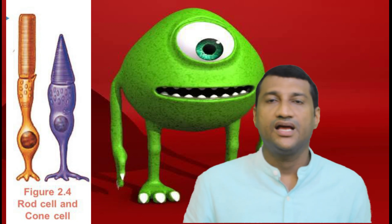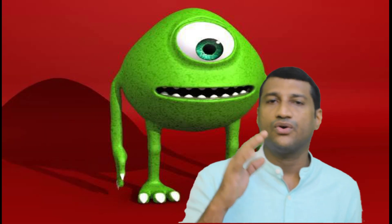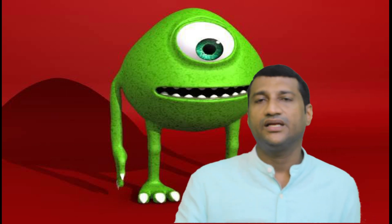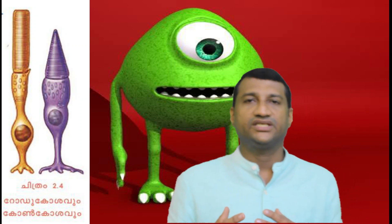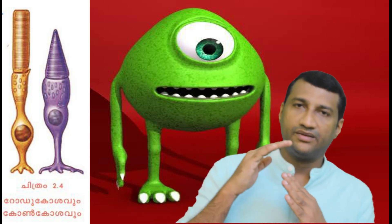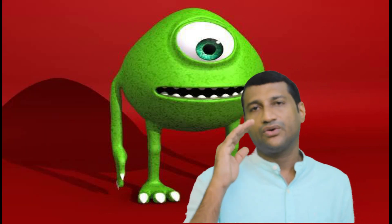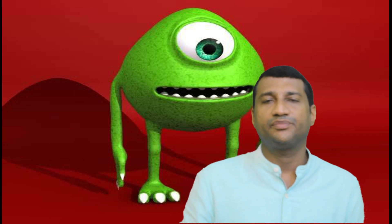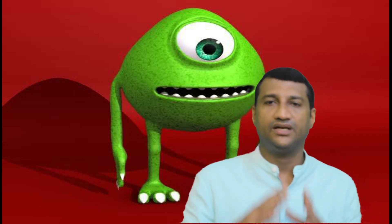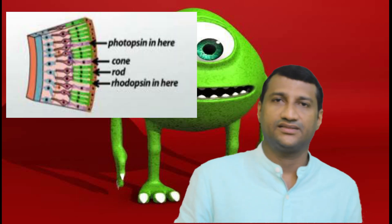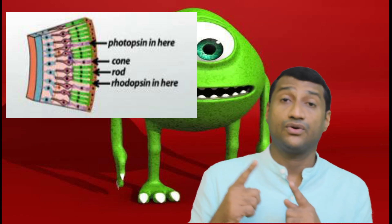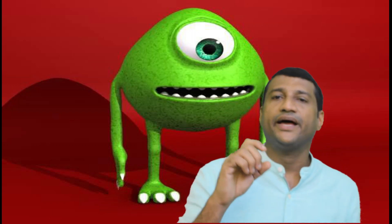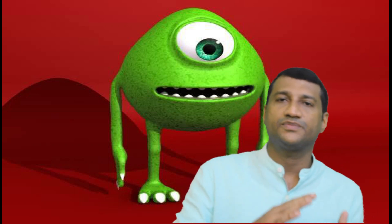That is why we will discuss the two types of cells in our eye. First one is a rod cell, and second one is a cone cell. Rod cells contain the pigment rhodopsin. Cone cells contain the pigments photopsin and iodopsin. Then the combination is rhodopsin and photopsin.